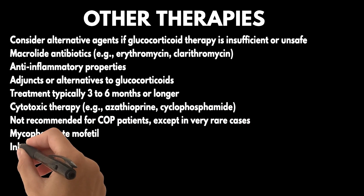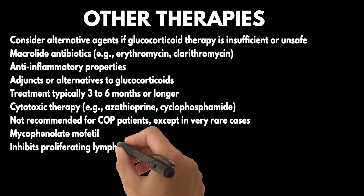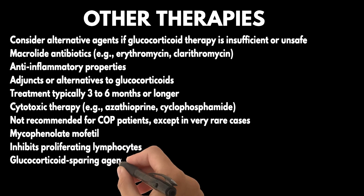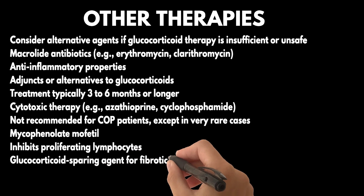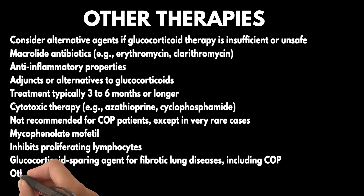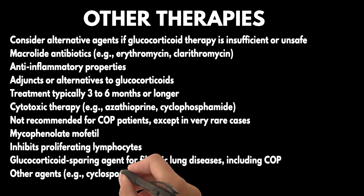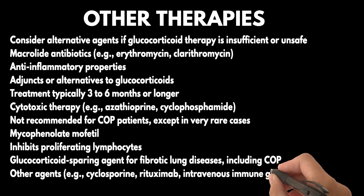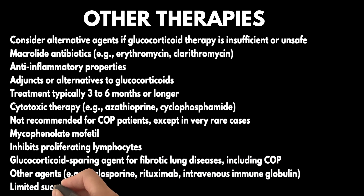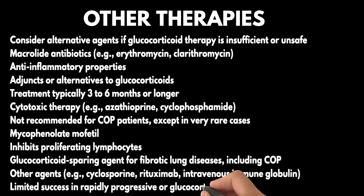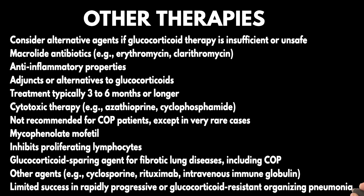Mycophenolate mofetil, an inhibitor of proliferating lymphocytes, is increasingly used as a glucocorticoid-sparing agent in the treatment of fibrotic lung disease, including COP. Other agents, like cyclosporine, rituximab, and intravenous immune globulin, have been used with limited success in treating rapidly progressive disease or glucocorticoid-resistant organizing pneumonia.